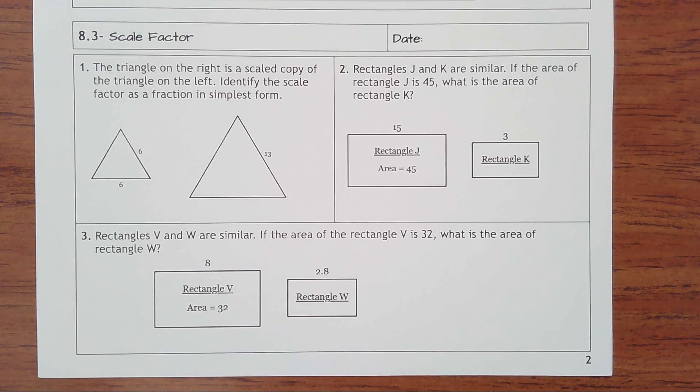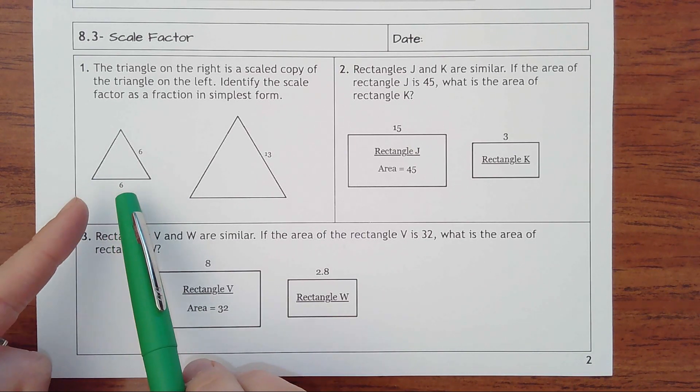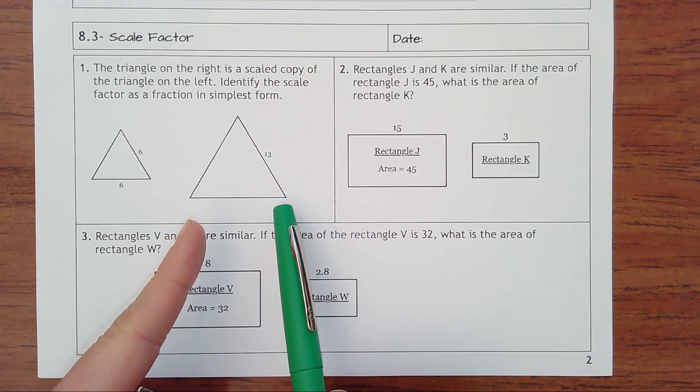Lesson 8.3 scale factor. Number one says the triangle on the right is a scaled copy of the triangle on the left. Identify the scale factor as a fraction in simplest form. So basically they're saying this smaller triangle was multiplied or divided by something, but multiplied by a fraction or a whole number to create this larger triangle.